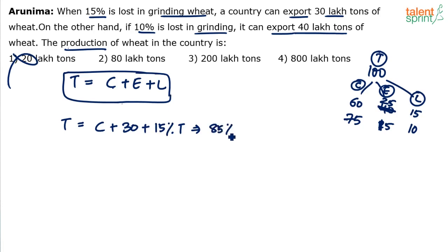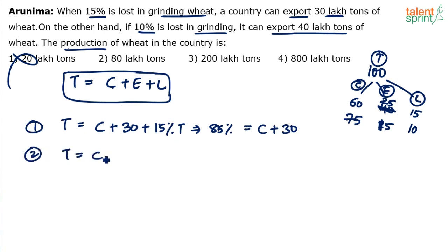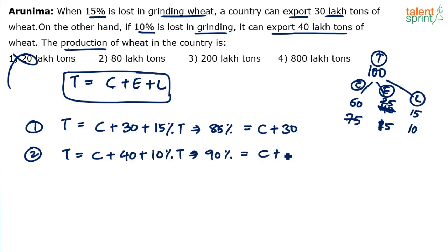Which implies 85% of T equals consumption plus 30 lakh tons. In Case 2, the total equals consumption plus 40 lakh tons exported plus 10% lost in grinding — which means 90% of T equals consumption plus 40. Now solve these two equations: 85% of T and 90% of T, where T is what is required.